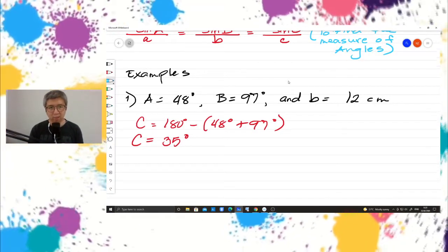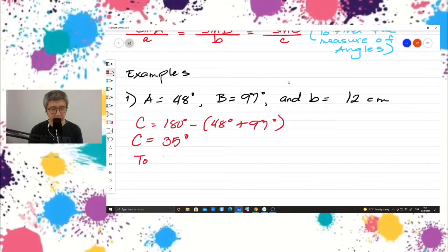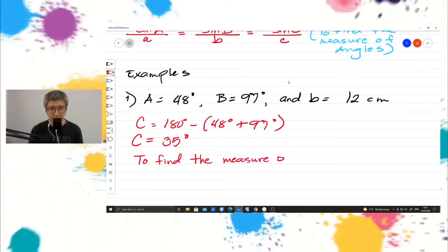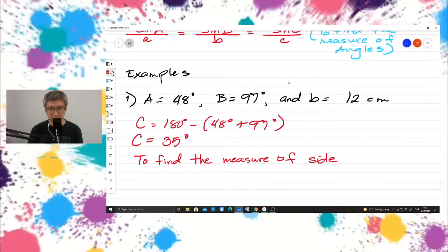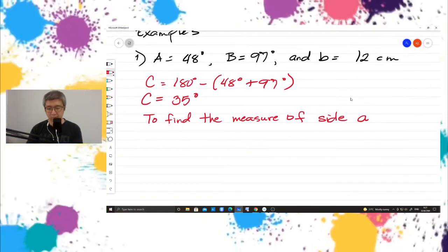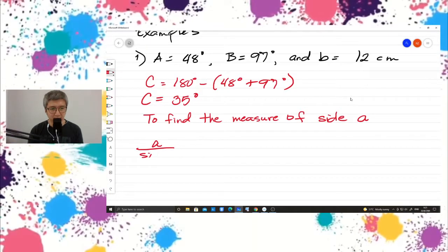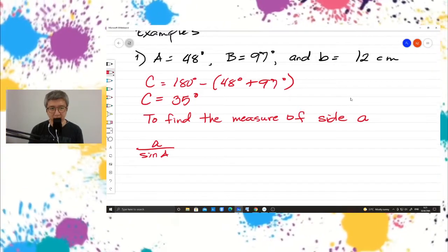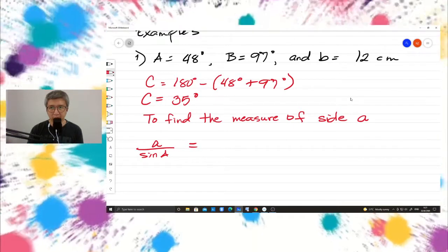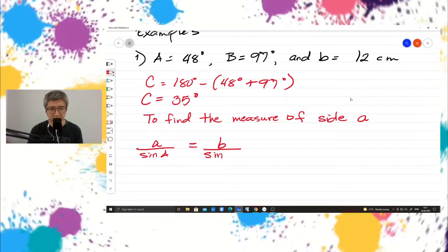Now, let us find the measure of side A. So by using this formula, easy to remember, A over sine A, and they are all equals. So since we have the measure of side B here, so we will use B over sine B.